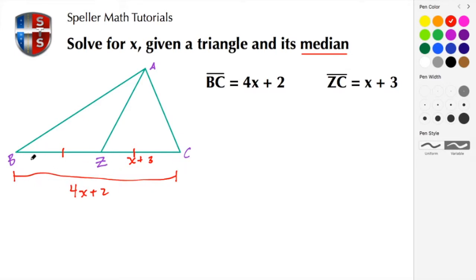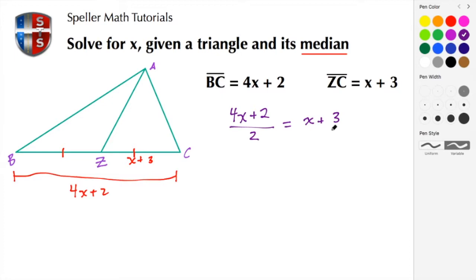Since 4x plus 2 is the entire length, if we take half of that it will give us BZ. So we have (4x + 2) divided by 2 equal to this length. Since these two segments are congruent, I can set this expression equal to X plus 3. I can put X plus 3 over 1, giving me a proportion to cross multiply.